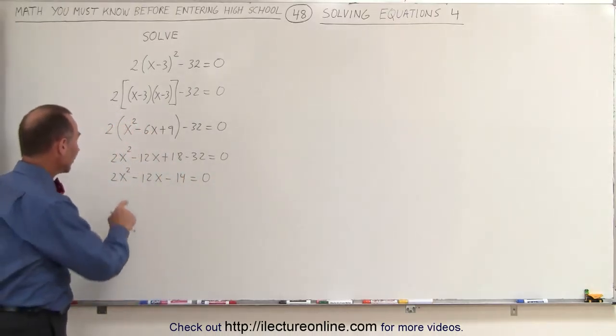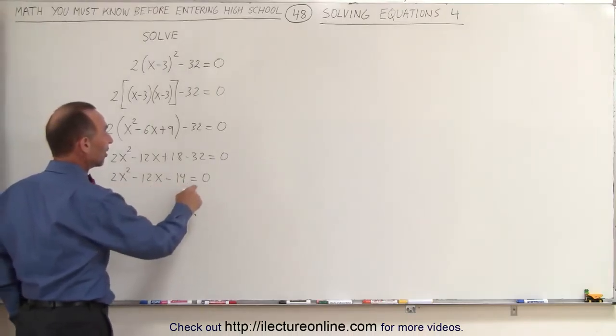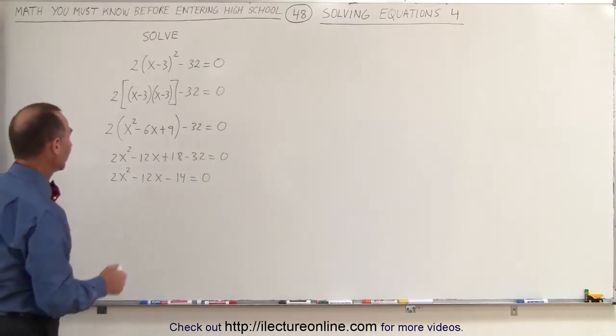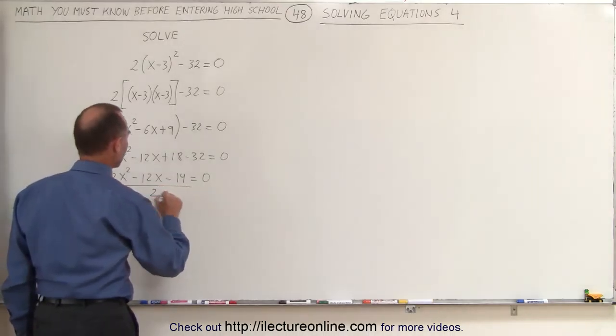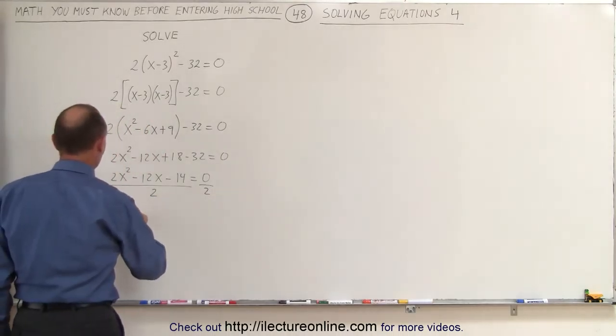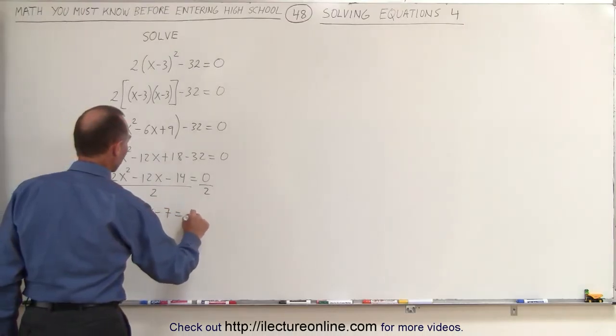Now notice that each of the three terms here is even, and it's set equal to 0, which means we can divide both sides by 2 and simplify. Divide the left side by 2, divide the right side by 2, and of course 0 divided by 2 is still 0. This gives us x squared minus 6x minus 7 equals 0.